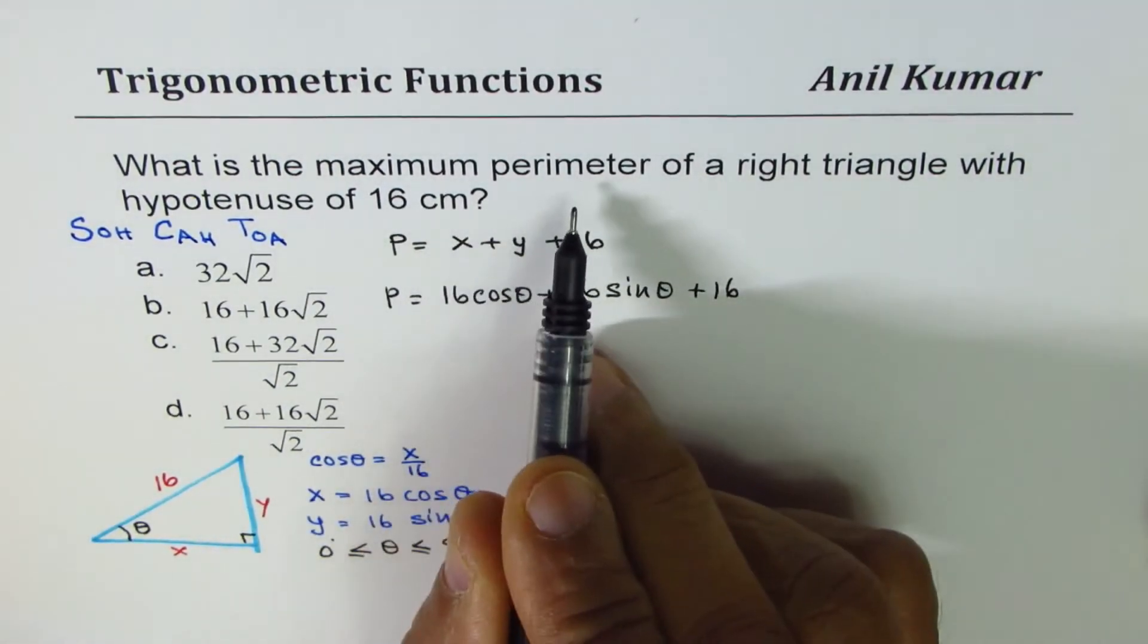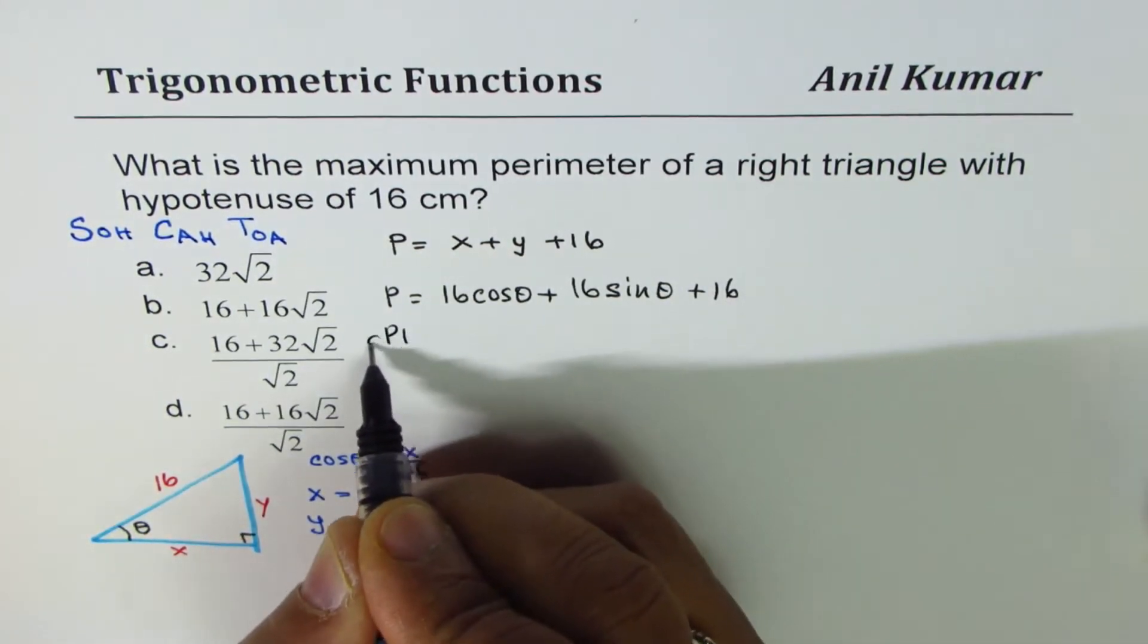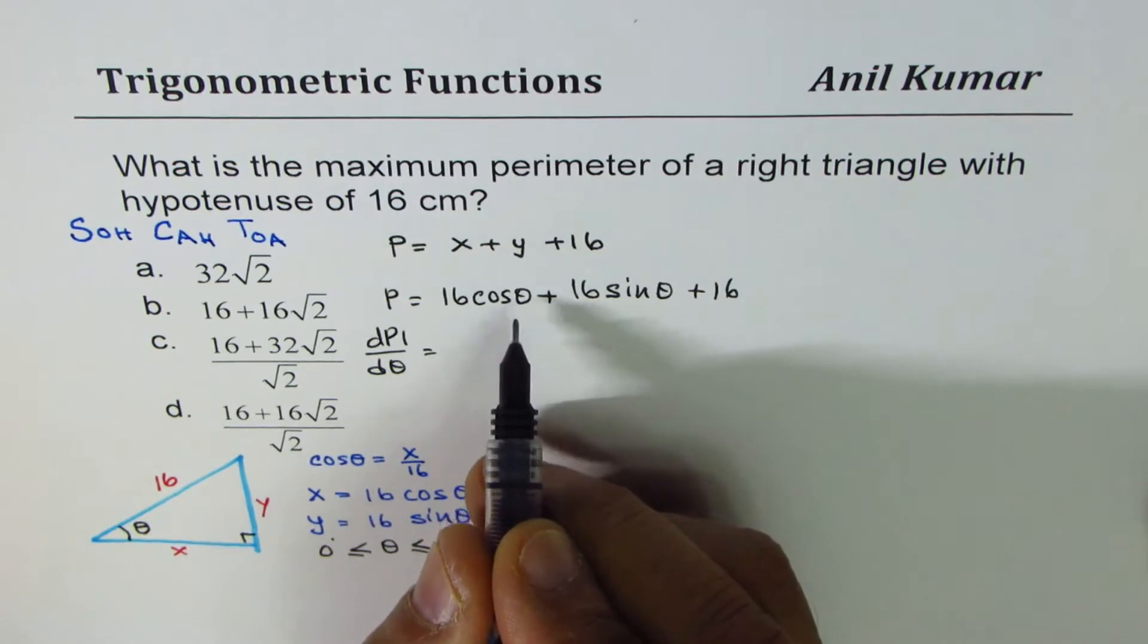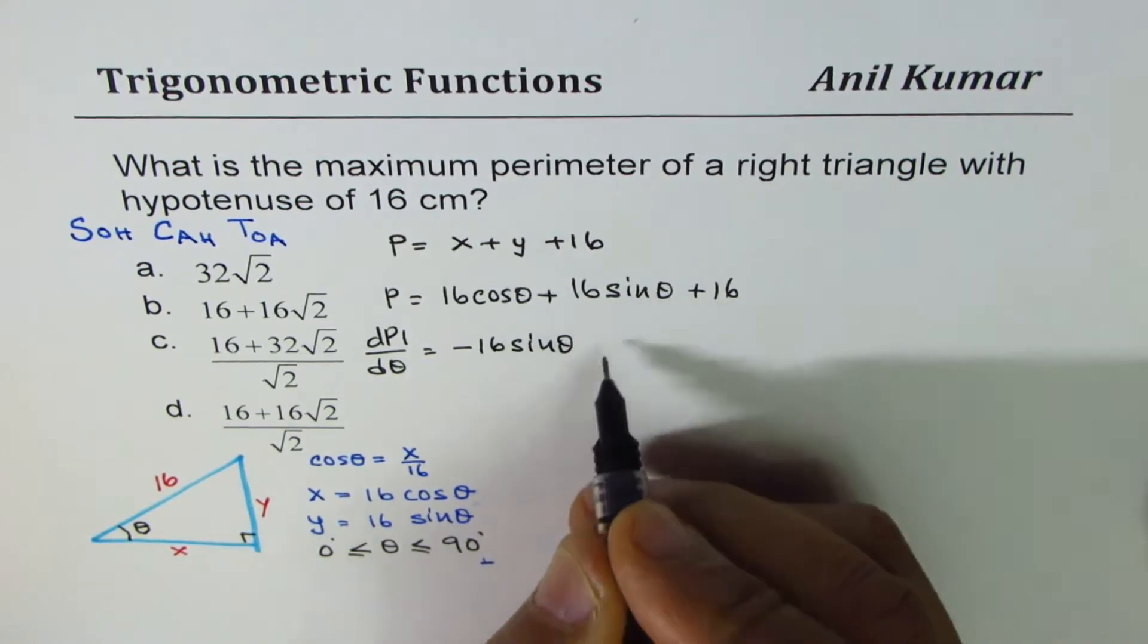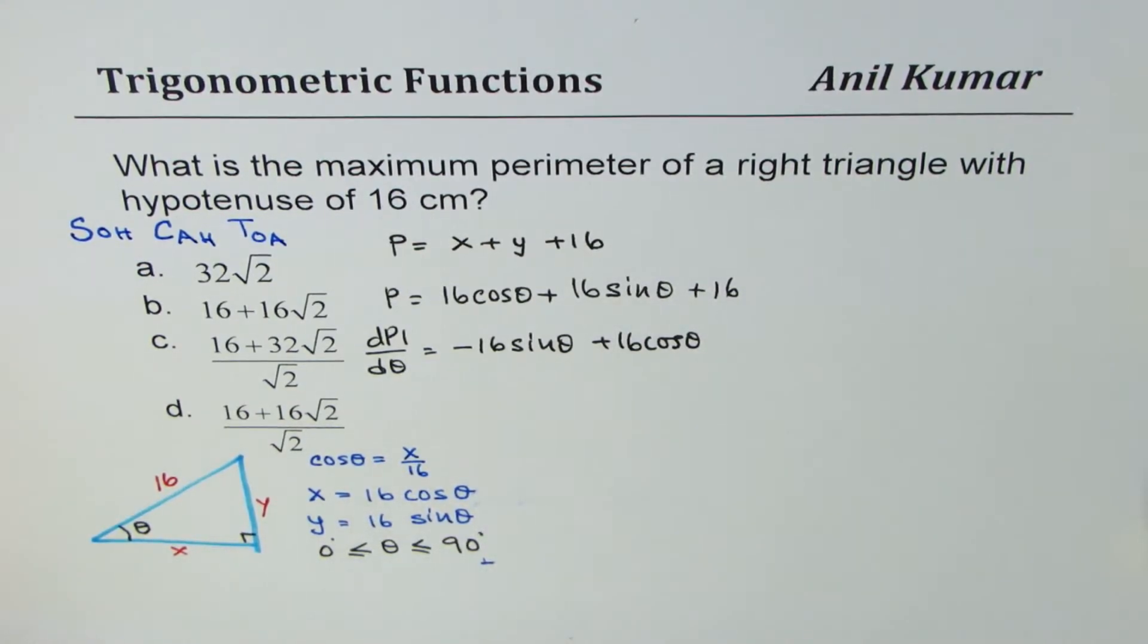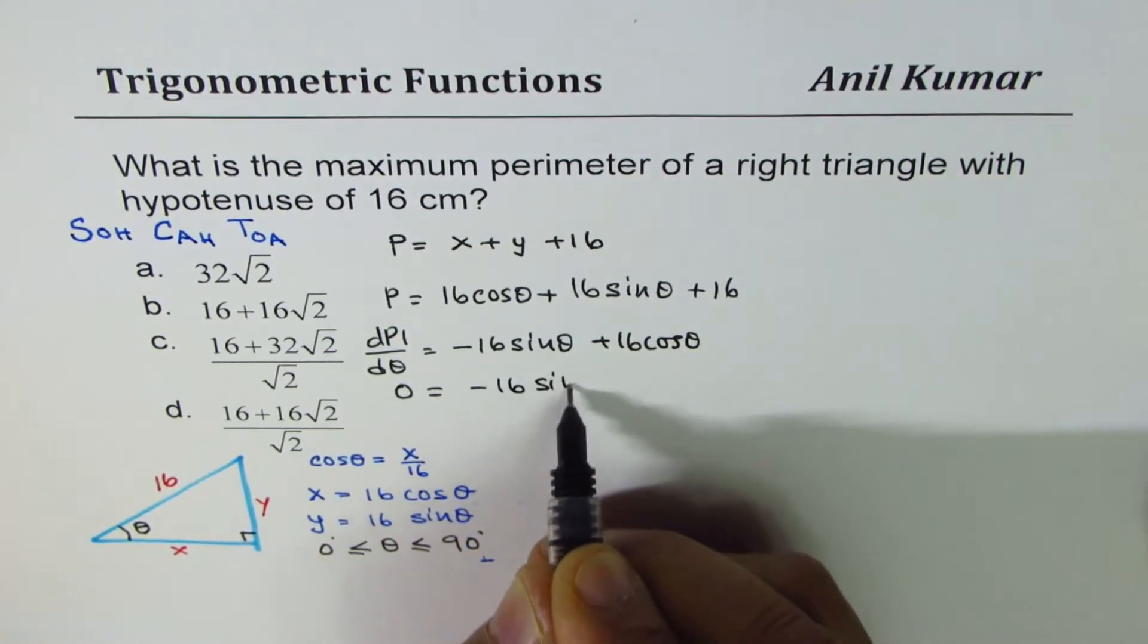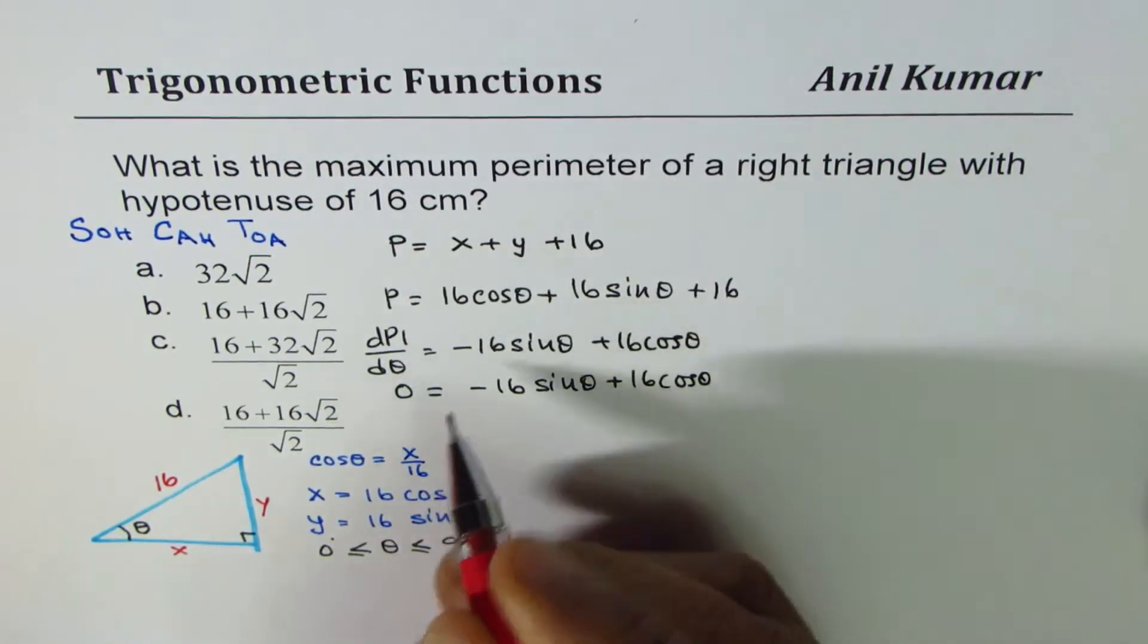To find maximum, we need to find the first derivative. So what is the rate of change of parameter with theta? If we differentiate with respect to theta, derivative of cos theta is minus sin theta, so we get minus 16 sin theta. Derivative of sin theta is plus cos theta, so we get plus 16 cos theta.